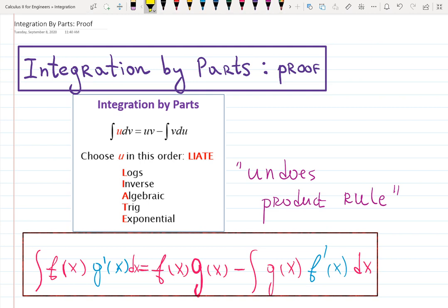For example, sometimes we teach it as integral of u dv equals u times v minus integral v du. Here is the LIATE mnemonic rule that helps you choose u: logarithmic, inverse, algebraic, trigonometric, or exponential.